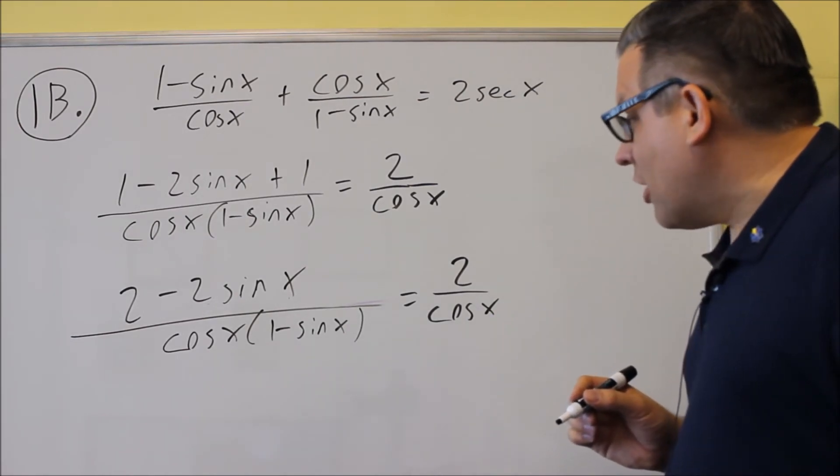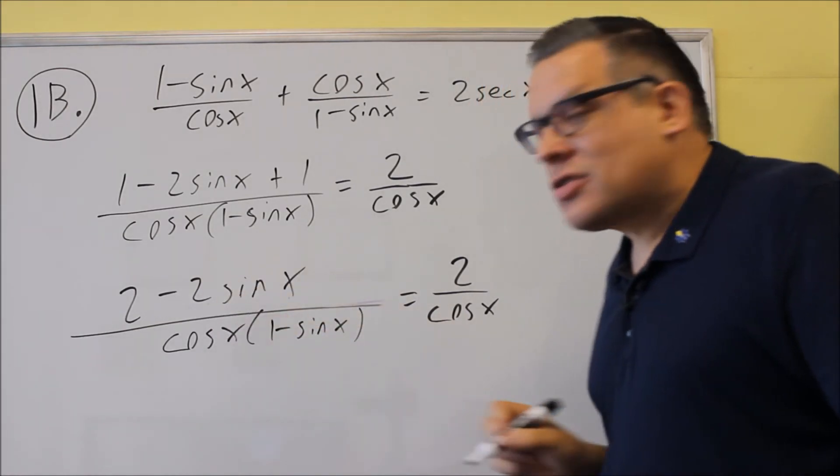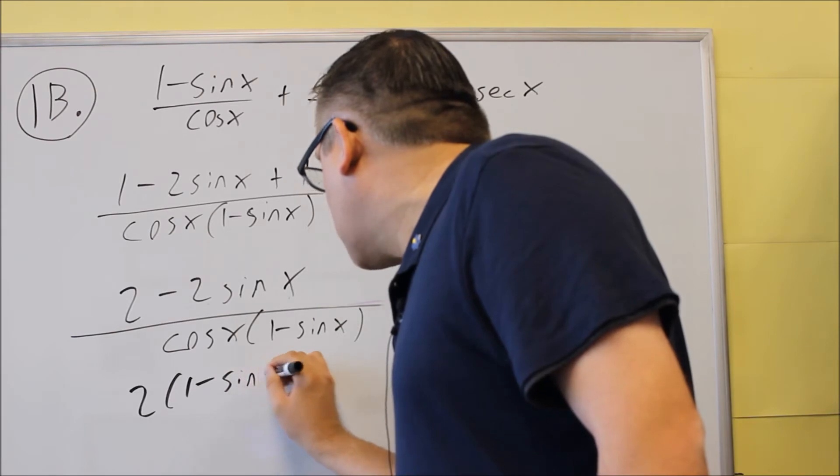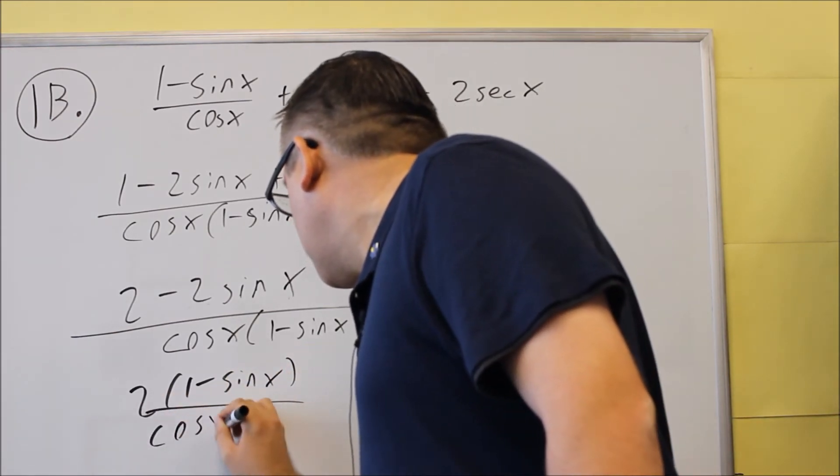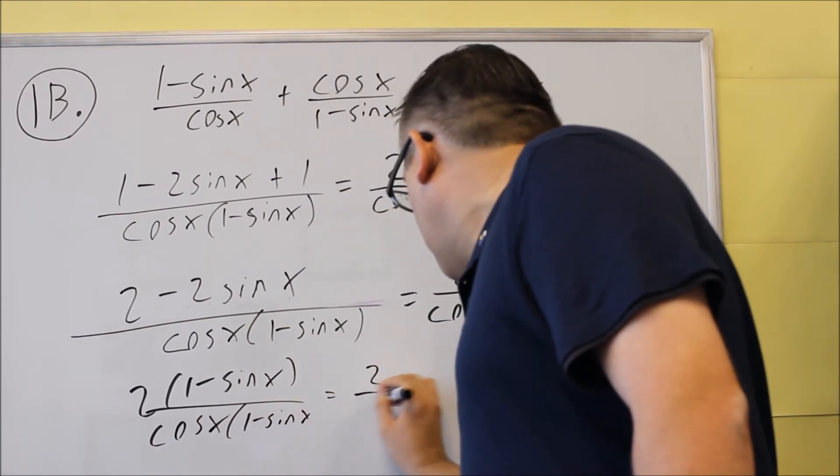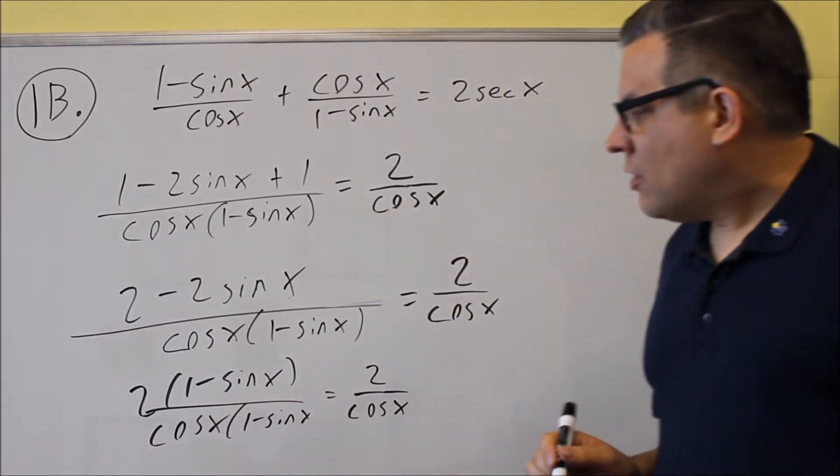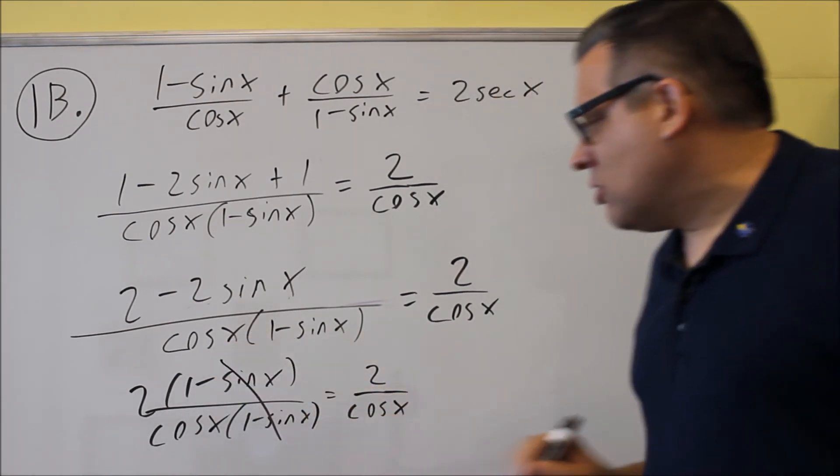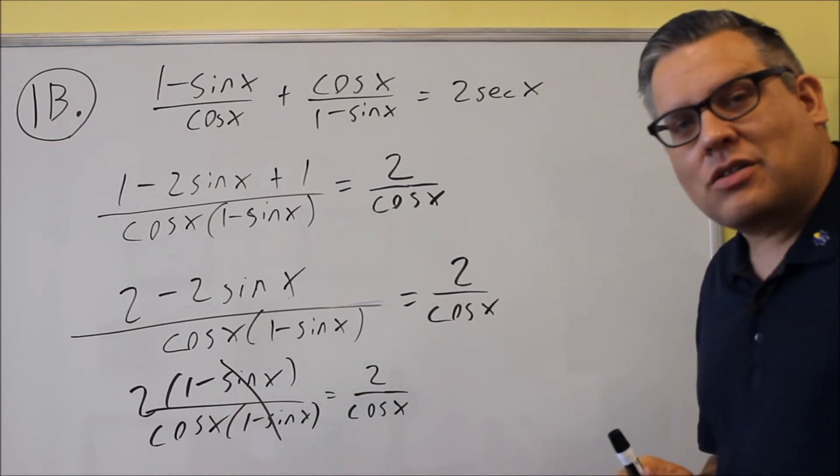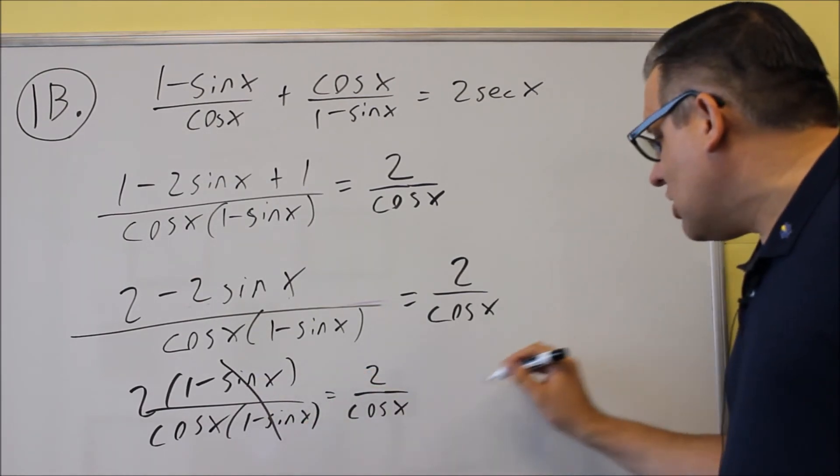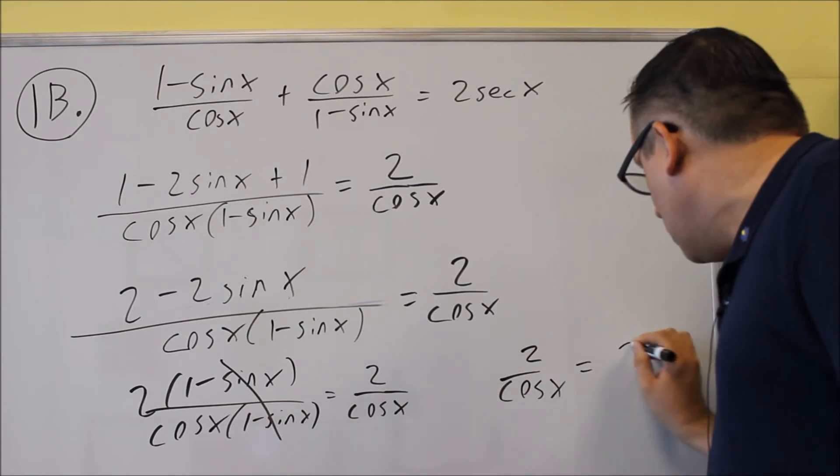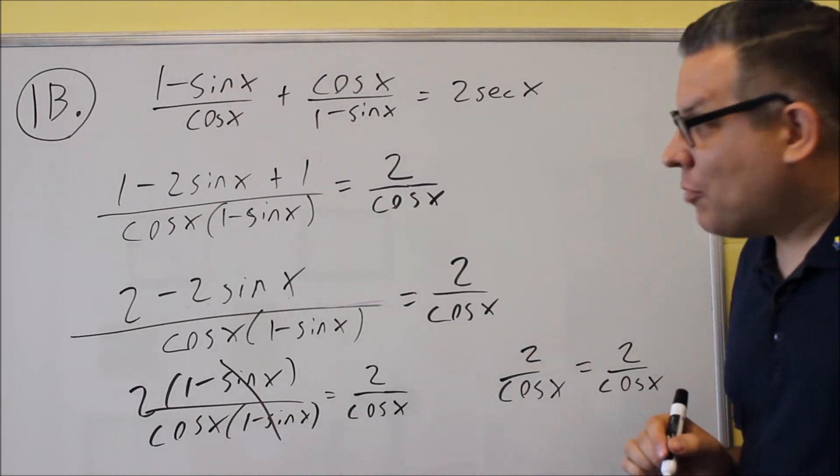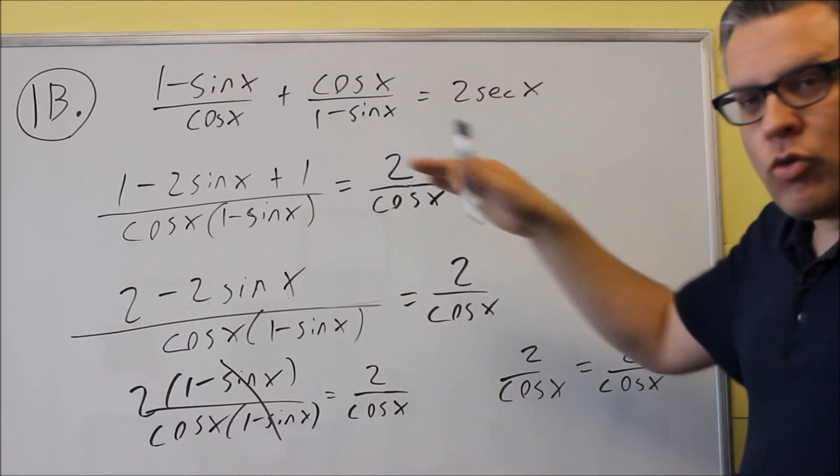Now, the next thing we want to do as far as techniques is this top part is something that we can factor. So I'm going to factor out a 2, and I get 1 minus sine x down below. So I factor out a 2, that's another one of our techniques, and I'm going to cancel out these two 1 minus sines. And when you do that, you do get both sides equal. The last step I'll just show over here, you'll get 2 over cosine x equals 2 over cosine x, and the problem is solved.